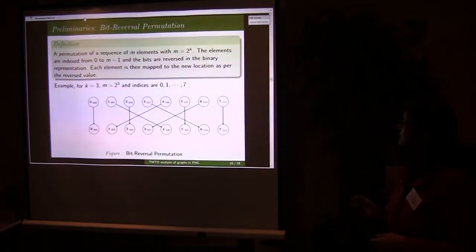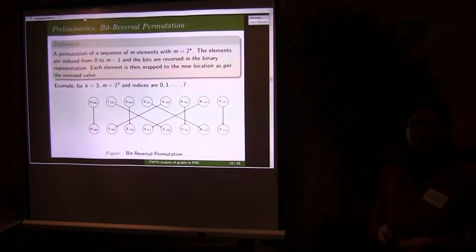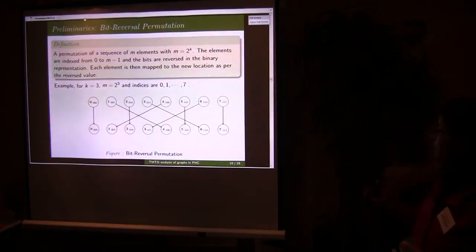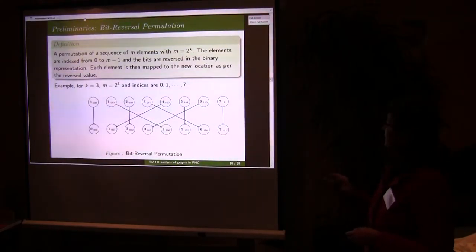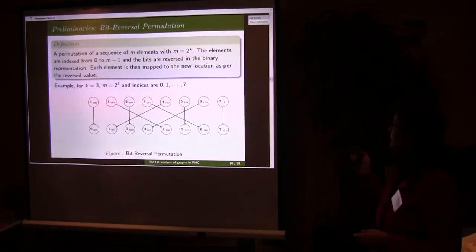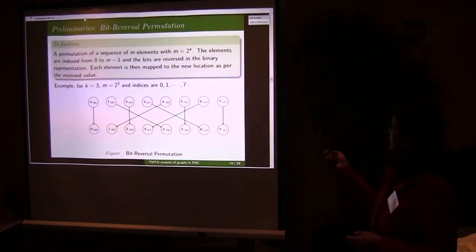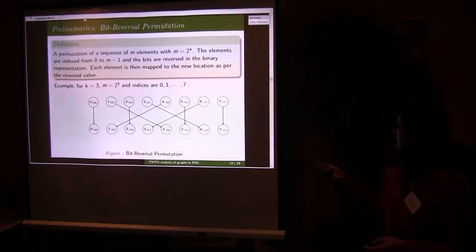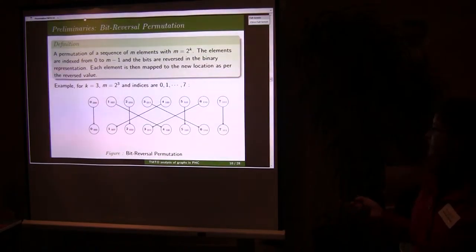This is bit reversal permutation, a permutation defined on the array where the number of elements are in power of 2. We index the elements from 0 to m minus 1, where m is 2 power k. Then the permutation will be the bit reversed of the indices. So this is the graph showing the bit reversal permutation.